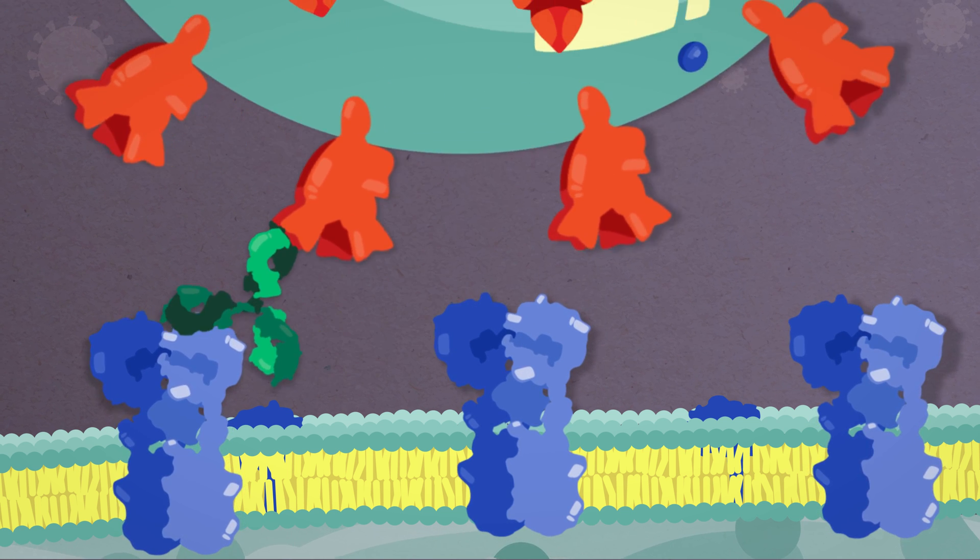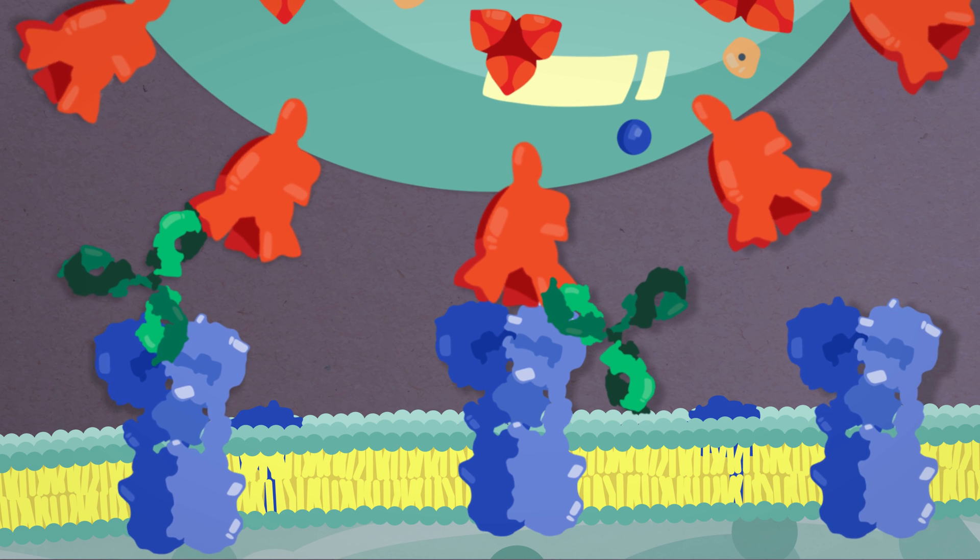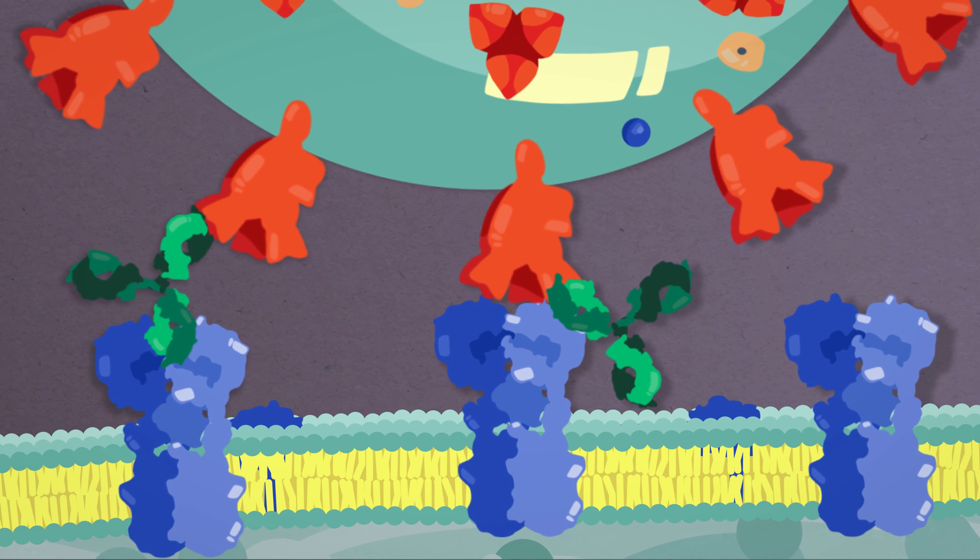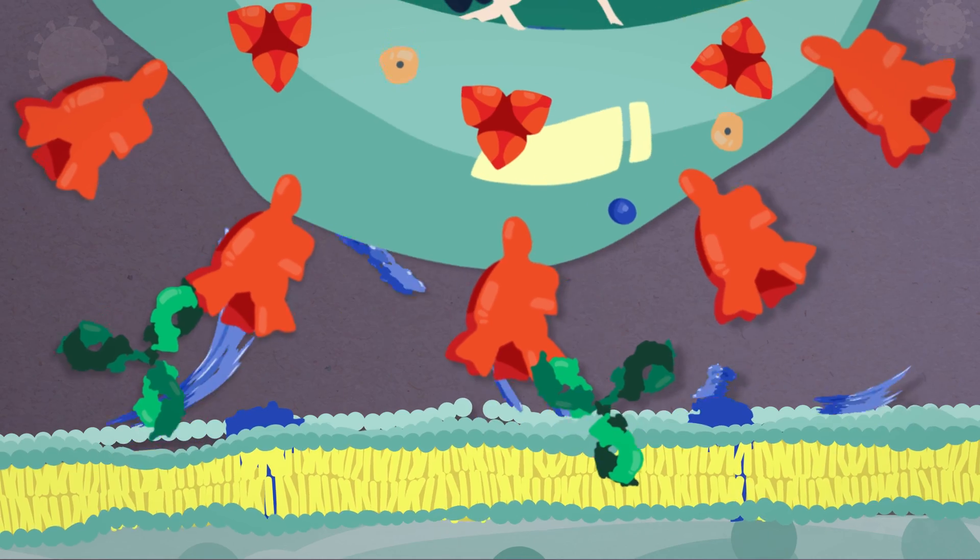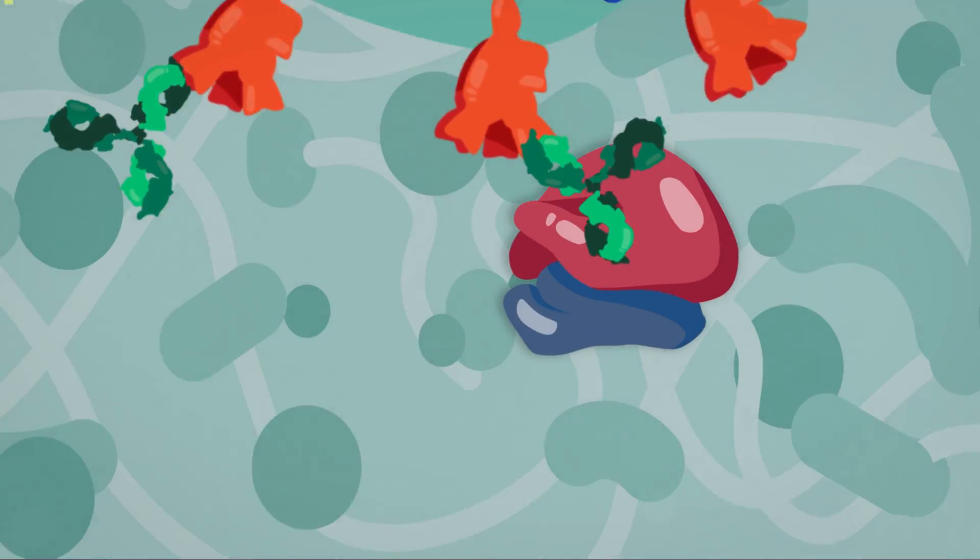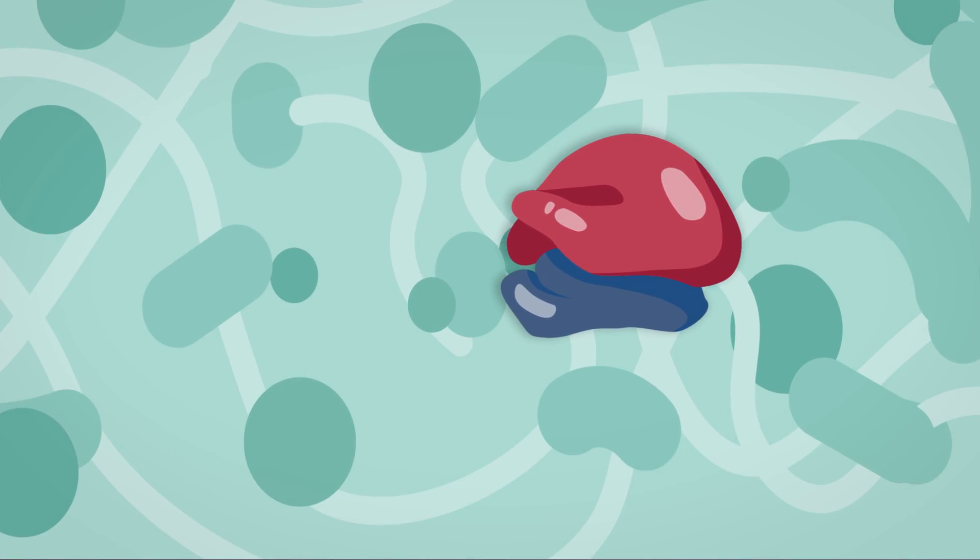Even if the virus successfully attaches, antibodies can prevent it from penetrating our cell membranes. If the virus still manages to enter the cell, antibodies can still prevent the virus from releasing its genome into the host cell for replication.